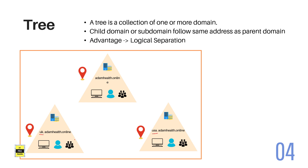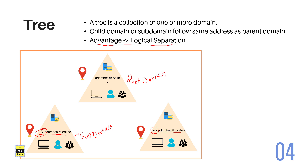For example, branches in the UK can be noted as uk.adamshealth.online, or branches in the USA can be organized as usa.adamshealth.online. Here, adamshealth.online is the root domain and uk and usa.adamshealth.online are subdomains. That forms a tree. In a tree, there are one or more domains, and subdomains follow the same namespace as the parent domain. The advantage here is logical separation and ease of management. A tree is a collection of multiple domains that follow the same parent namespace.